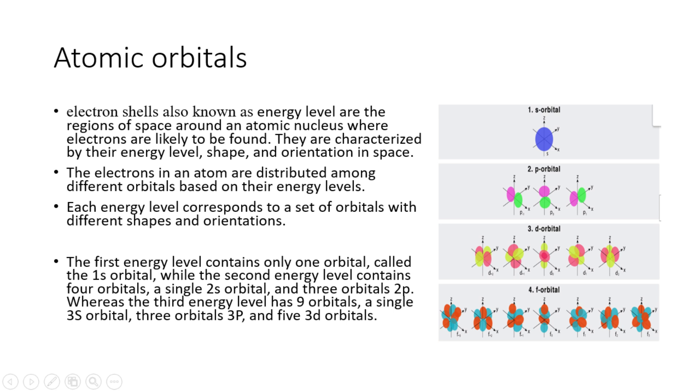The first energy level contains only one orbital, called the 1s orbital, while the second energy level contains four orbitals: a single 2s orbital and three 2p orbitals. Whereas the third energy level has nine orbitals: a single 3s orbital, three 3p orbitals, and five 3d orbitals.